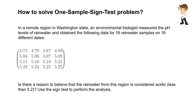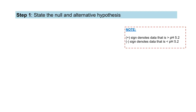Let's have a look at the steps that we have to perform in order to solve this problem. There are altogether seven steps, starting with the first step: to state the null and alternative hypothesis.